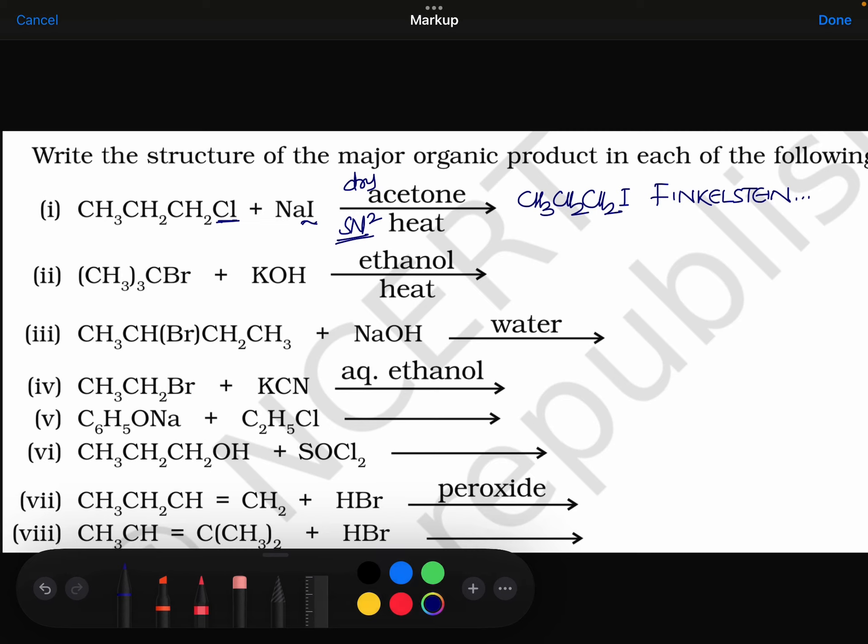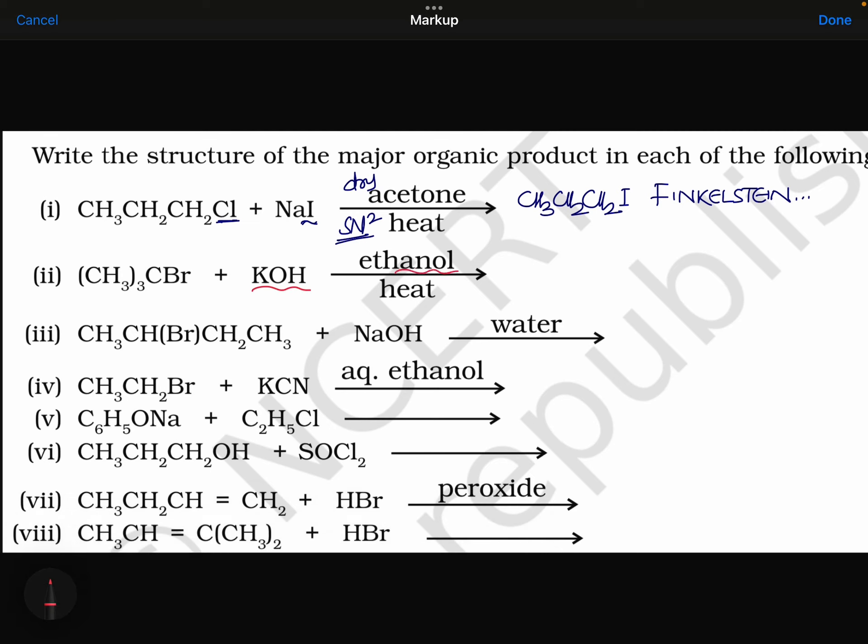Next, this is KOH, ethanol, means alcoholic KOH. Alcoholic KOH will prefer to go for elimination. Your elimination will be taking place, means minus HBr. And you will be getting your CH3, CH3, double bond CH2. Means 2-methylpropene, this is elimination product.